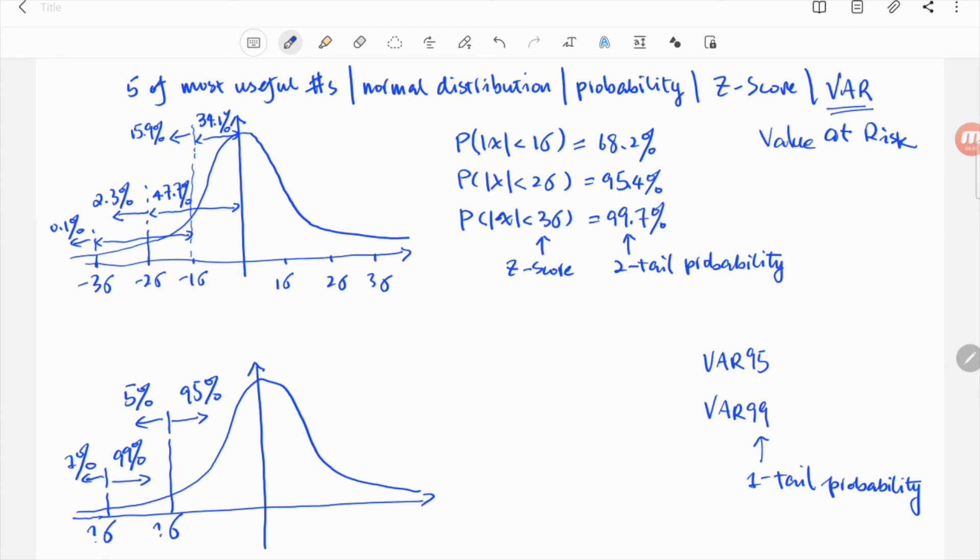Looking at the previous three numbers, the 5% probability is between 2.3% and 15.9%. So, 195 must be between minus 2 sigma and minus 1 sigma. And the number is 1.645 sigma.